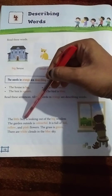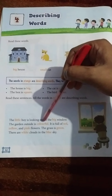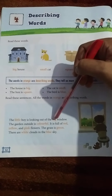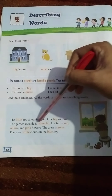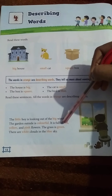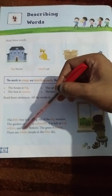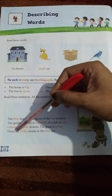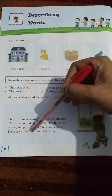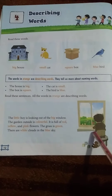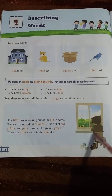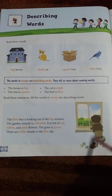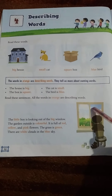The little boy is looking out of the big window. The garden outside is colorful. It is full of red, yellow and pink flowers. The grass is green. There are white clouds in the blue sky.